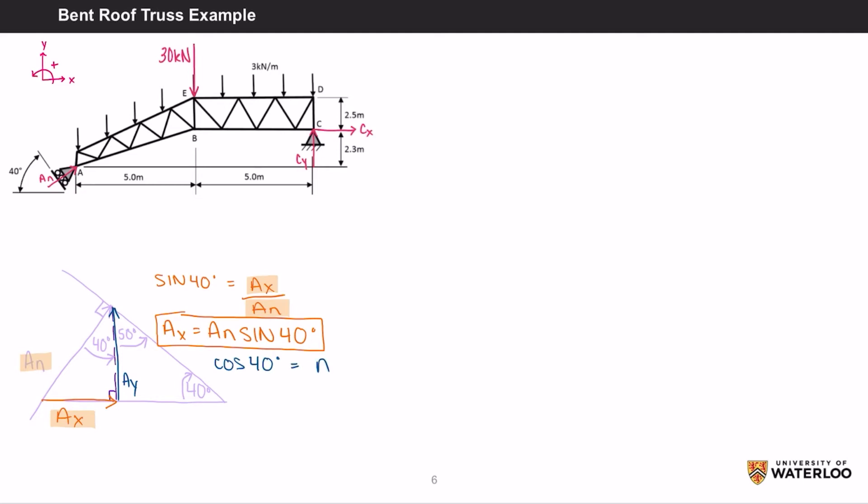Cos 40 equals AY over AN, giving you AY equals AN cos 40. We can also add the x and y components onto the original diagram.